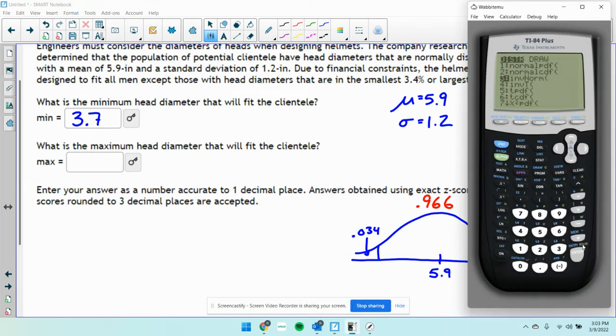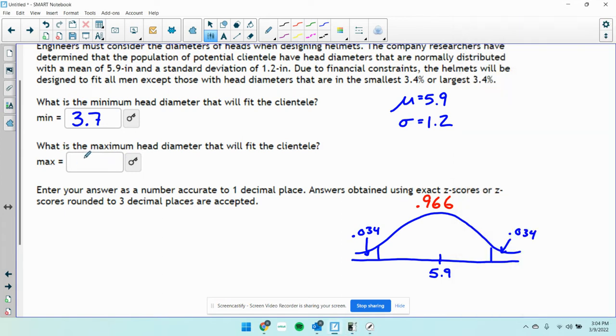So if I do that, 2nd, distribution, inverse normal, 0.966, everything else stays the same. I get 8.09 or 8.1.